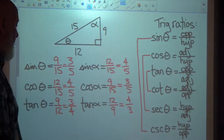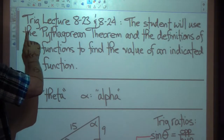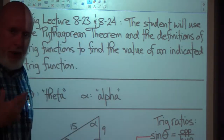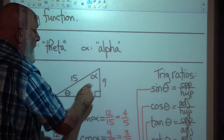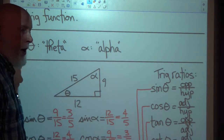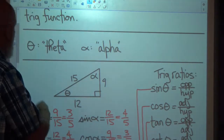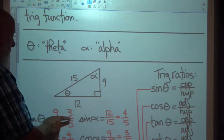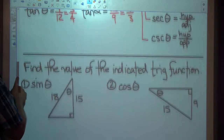Looking at our objective, it says we'll use the Pythagorean theorem if necessary — meaning we may not know all three side lengths of our indicated triangle and might have to find a missing side. If we do, we'll use the Pythagorean theorem, then use our definitions of trig functions. Let's take a look at the first problem.